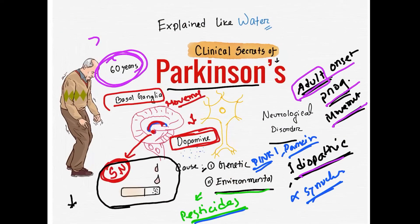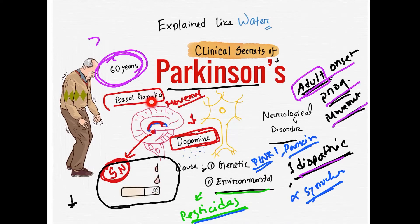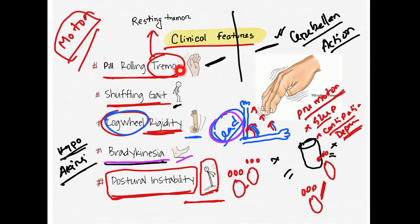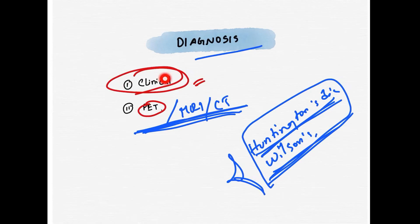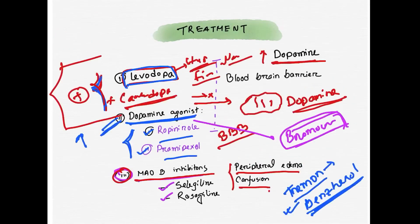Quick review: Parkinson's disease is an adult onset progressive movement disorder occurring after 60 years of age. Substantia nigra dopamine-producing neurons degenerate. The cause is mainly idiopathic; genetic causes include PINK1, Parkin, and alpha-synuclein mutations. Non-smokers have a higher risk. The basal ganglia is related to movement. Clinical features include pill-rolling resting tremor, shuffling gait, cogwheel and lead pipe rigidity, bradykinesia, and postural instability. Diagnosis is solely clinical. Treatment is Levodopa-Carbidopa combination, dopamine agonists like ropinirole and pramipexole, and MAO-B inhibitors like selegiline and rasagiline.